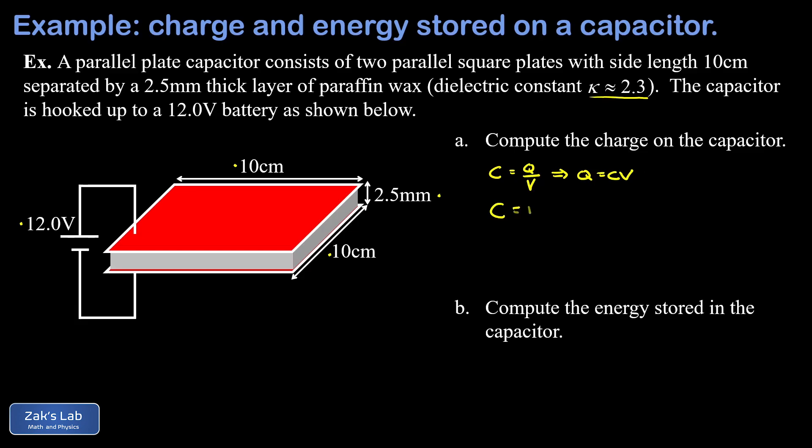To get the capacitance, that's kappa epsilon zero A over D, where kappa is the dielectric constant, epsilon zero is the permittivity of free space, A is the area of the plates, and little d is the separation between them.